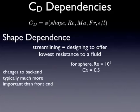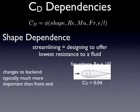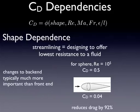For example, for a sphere at a Reynolds number of 10 to the 5th, the coefficient of drag is 0.5 — from the figure we saw in the last lecture. But for a streamlined sphere, the coefficient of drag is 0.04. This is a 92% reduction in drag just by extending the back end of the object, which is pretty amazing.